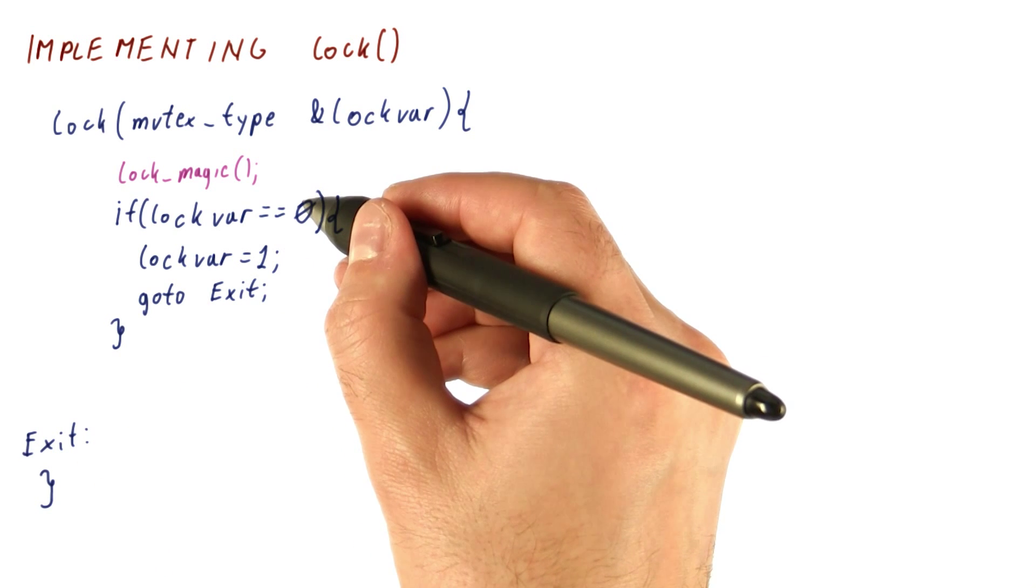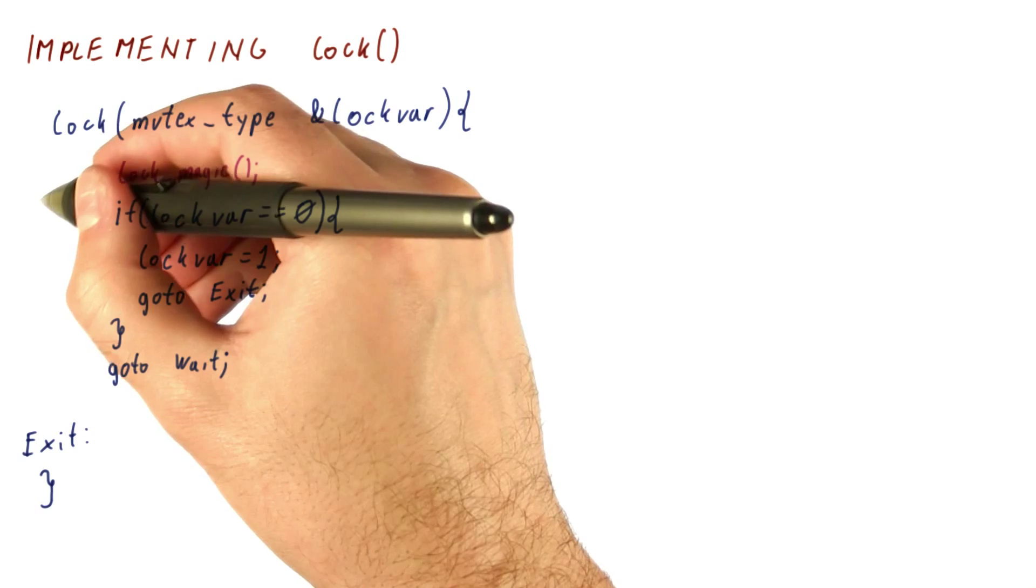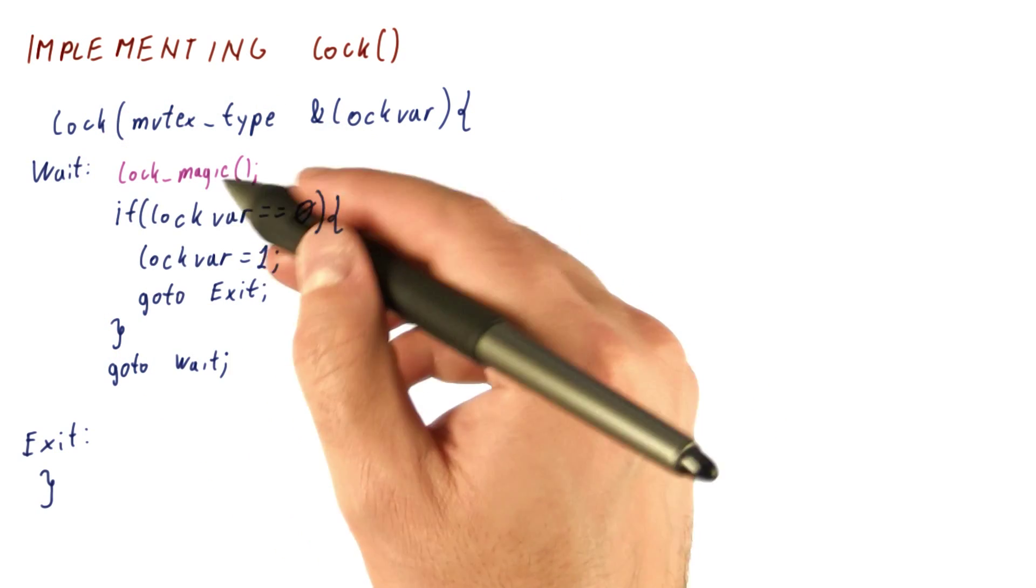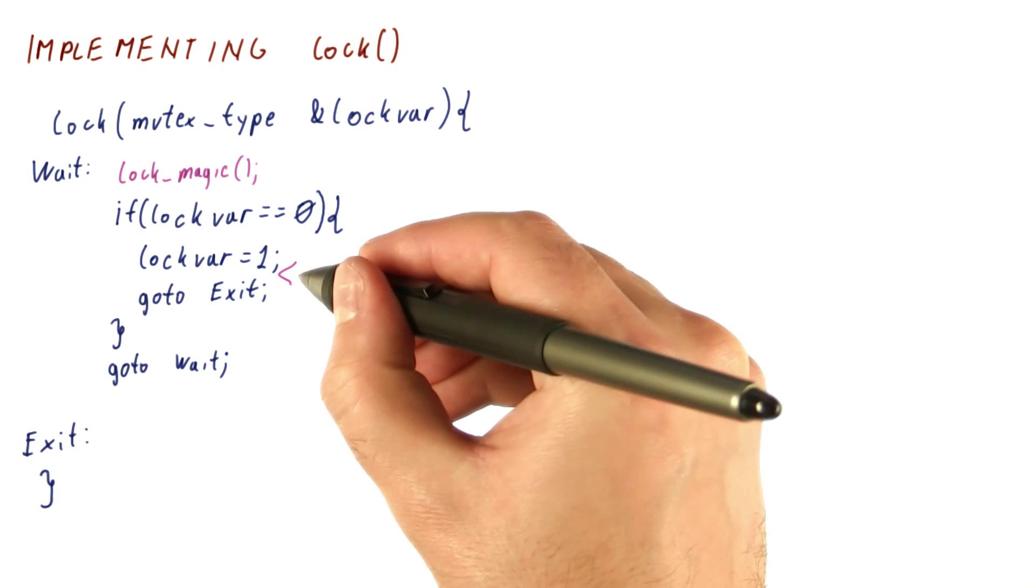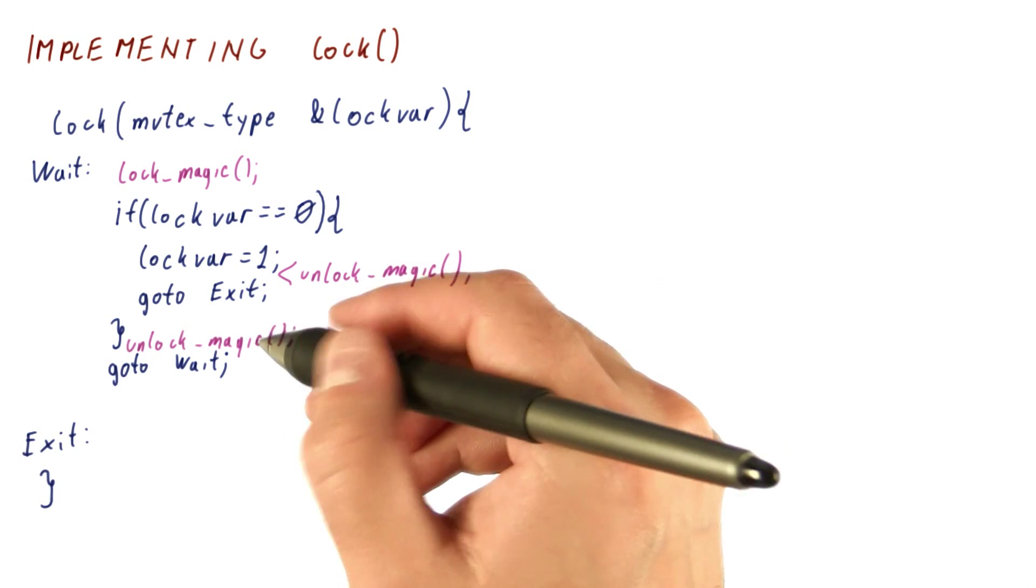If the lock variable is one, we repeat all of this. And we need to let others also be checking. So really, we need to insert the unlock magic here and here.